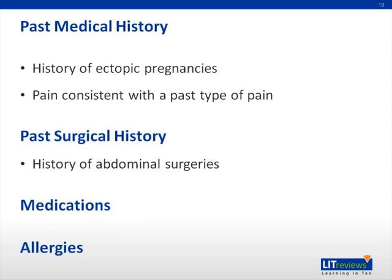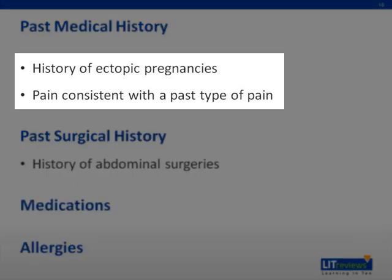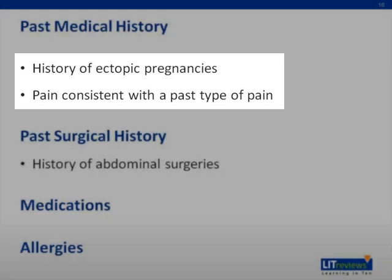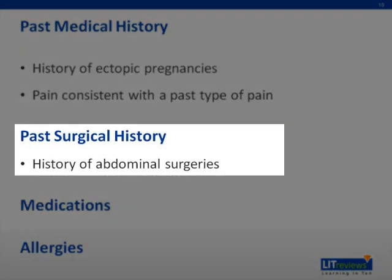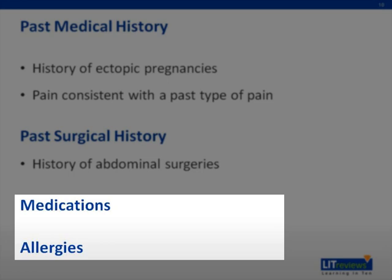With every patient, you want to find out their past medical history. In these particular patients, some pointed questions to ask are history of ectopic pregnancies, and whether they've had this pain in the past — such as in the patient with a ureteral stone, where many patients know what that pain feels like. Then go on to surgical histories, particularly abdominal surgeries, looking for signs of potential bowel obstruction, or to determine if they've had an appendectomy or ovaries removed. Medications and allergies can also help with the diagnosis.